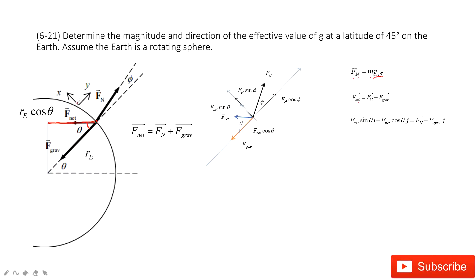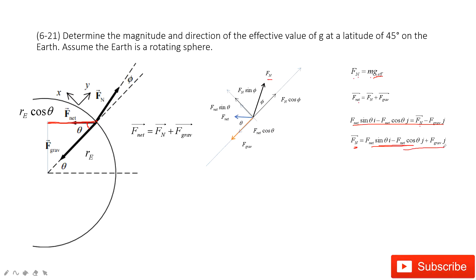At the x-component it is positive: fn·sin(θ). At the y-component it is negative: −F_net·cos(θ). The normal force is unknown but we can write it in its two components. Then we add the gravity, which is along the negative y-component. So you can write out the equations and find both the x-component and y-component of the normal force.